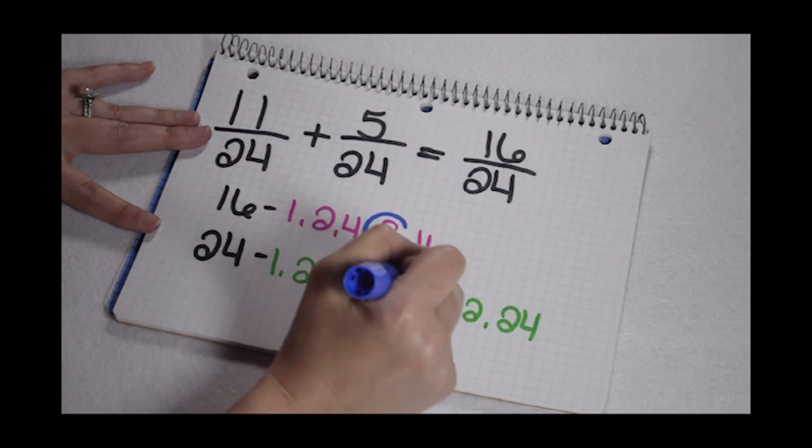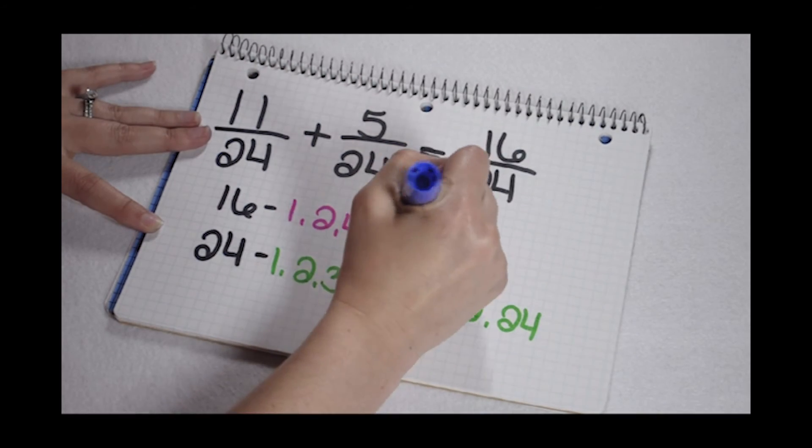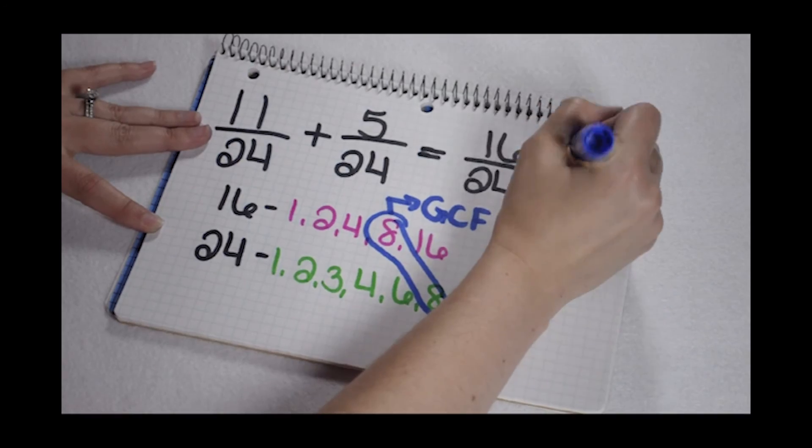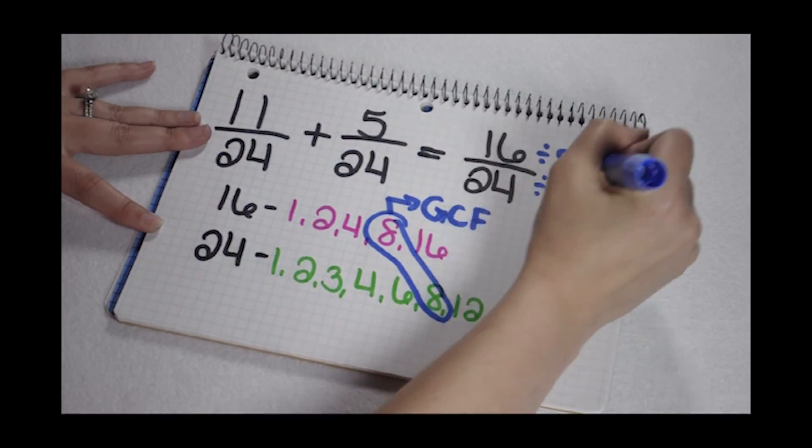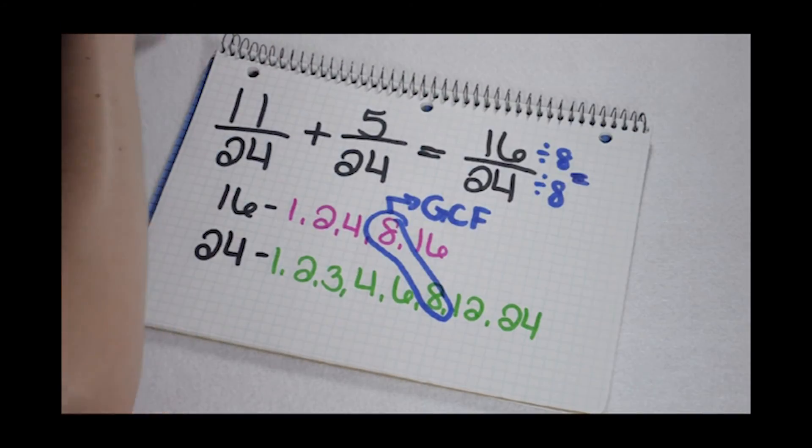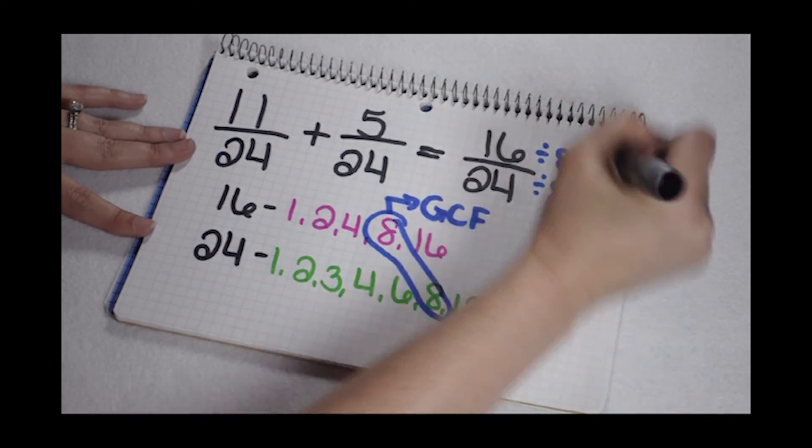Their greatest common factor is 8. So that means I can divide the numerator and the denominator by 8. 24 divided by 8 gives me 3. 16 divided by 8 gives me 2.